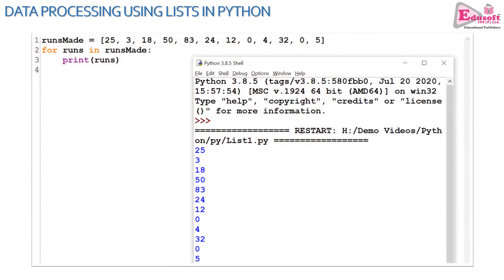Let us begin exploring various operations on list. As you see in this small three-line program, we have a list named runsMade with some 12 values. A for loop is going through the list, browsing it. One by one the values are coming in the variable runs from the list runsMade, and with every iteration, the current value is being printed on the screen as you see here.